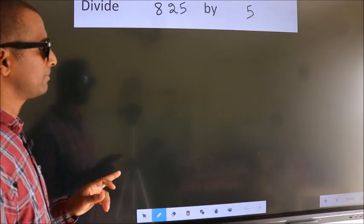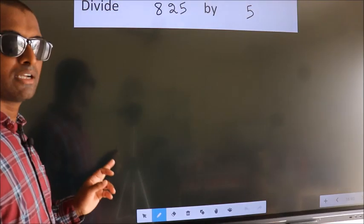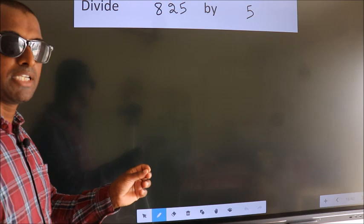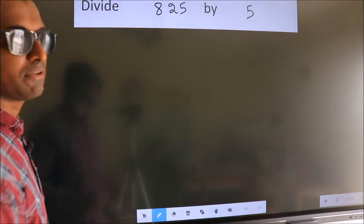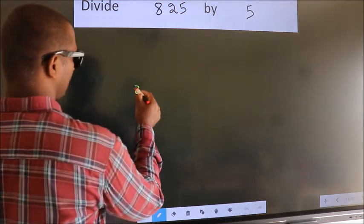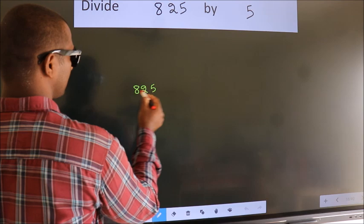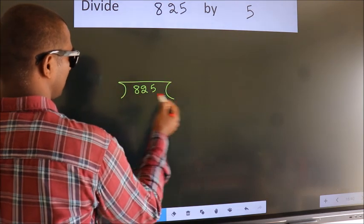Divide 825 by 5. To do this division, we should frame it in this way. 825 here, 5 here.